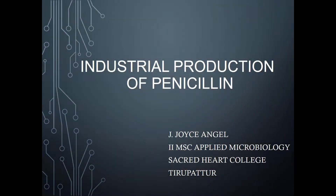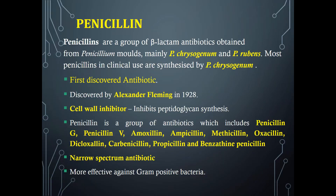Welcome back to another video tutorial. In this video we are going to learn about industrial production of penicillin. Penicillins are a group of beta-lactam antibiotics or secondary metabolites obtained from Penicillium species, mainly from Penicillium chrysogenum and Penicillium rubens. Most penicillins in clinical use are synthesized by Penicillium chrysogenum. It was the first discovered antibiotic, by the famous scientist Alexander Fleming in 1928. It was a serendipity discovery, which means it was accidentally discovered.